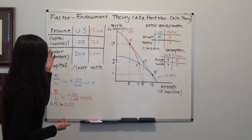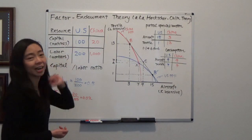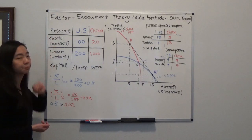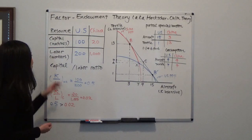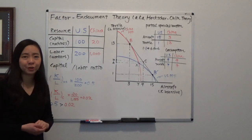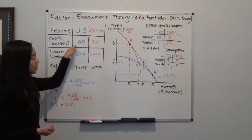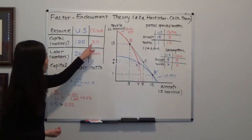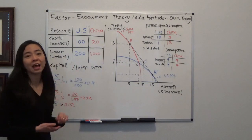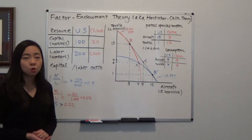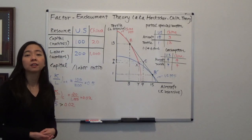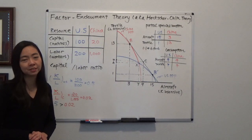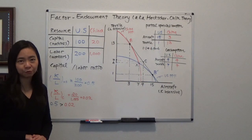Here is our example. We have the United States and China, and we have two different resources: capital, that's the number of machines, and also labor, that's the number of workers. Suppose the U.S. has 100 machines and 200 workers, but China has 20 machines and 1,000 workers. We're going to calculate the capital-labor ratio in order to determine which country is relatively capital abundant and which is relatively labor abundant.